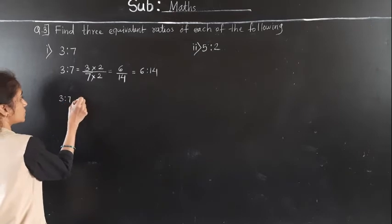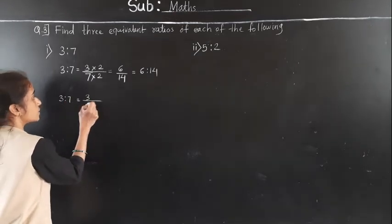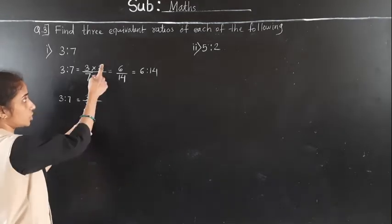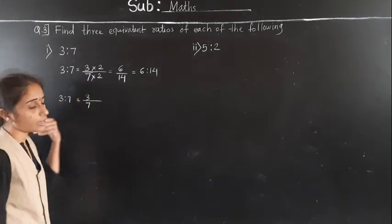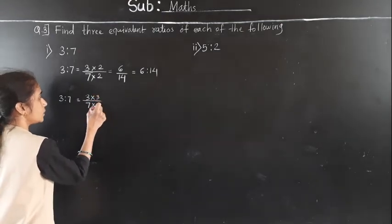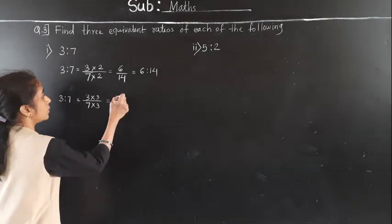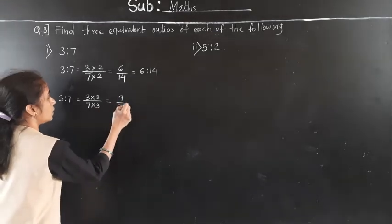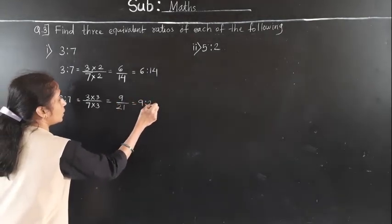First, multiply numerator and denominator by 2: 3 twos are 6, 7 twos are 14. So the first equivalent ratio is 6 to 14. Next, multiply by 3: 3 threes are 9, 7 threes are 21. Second equivalent ratio is 9 to 21.